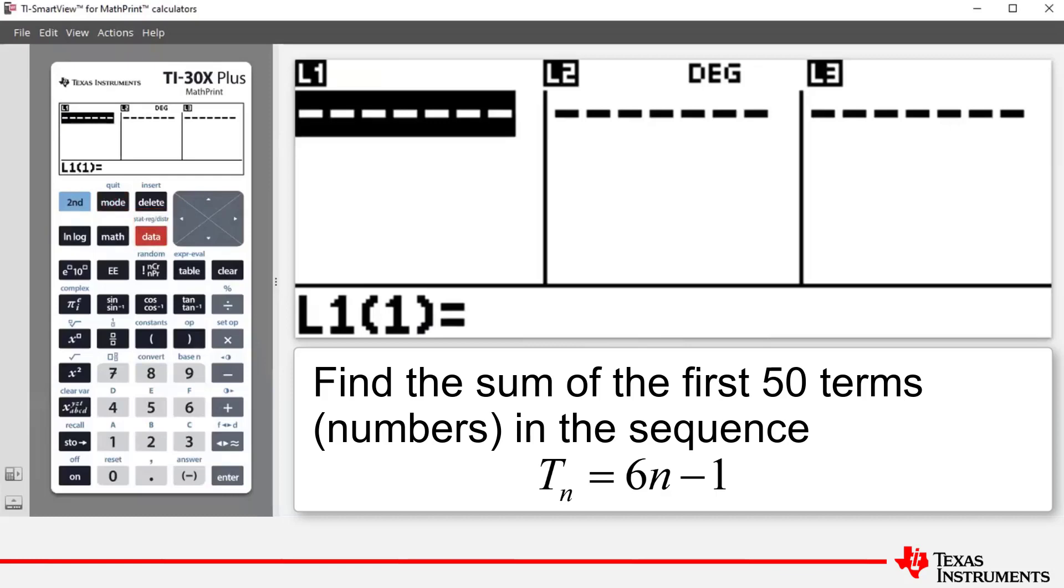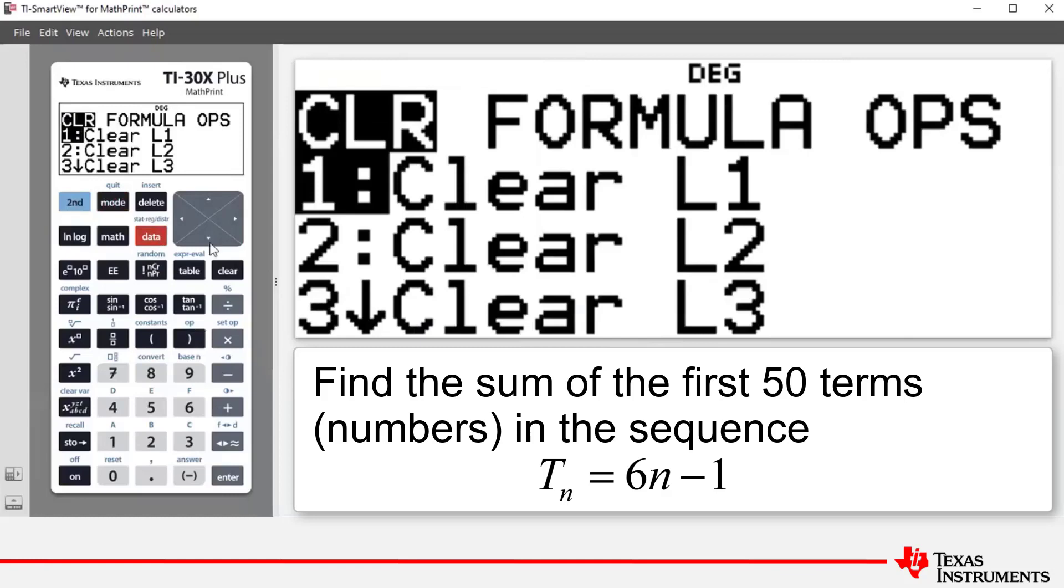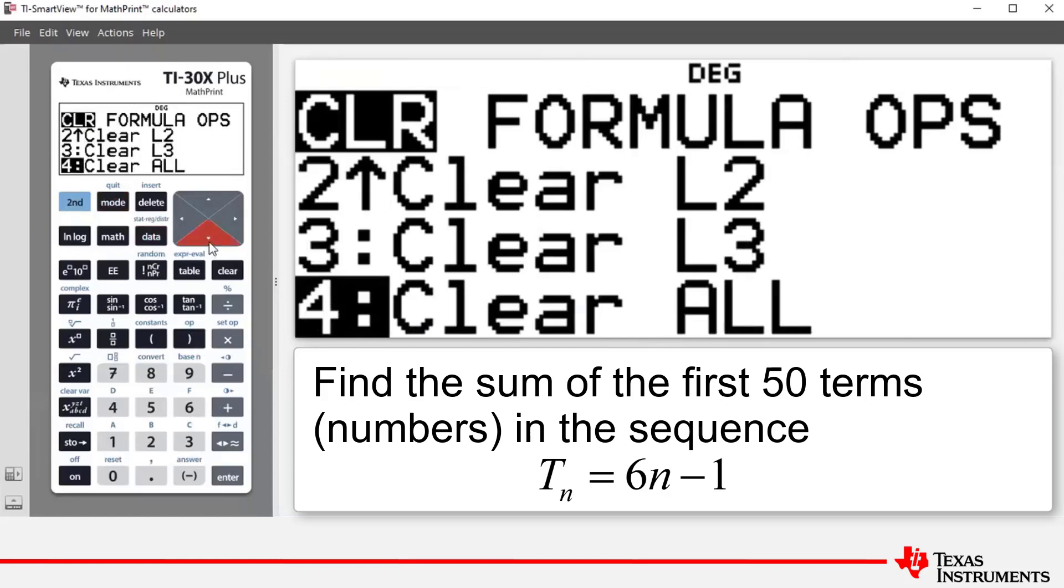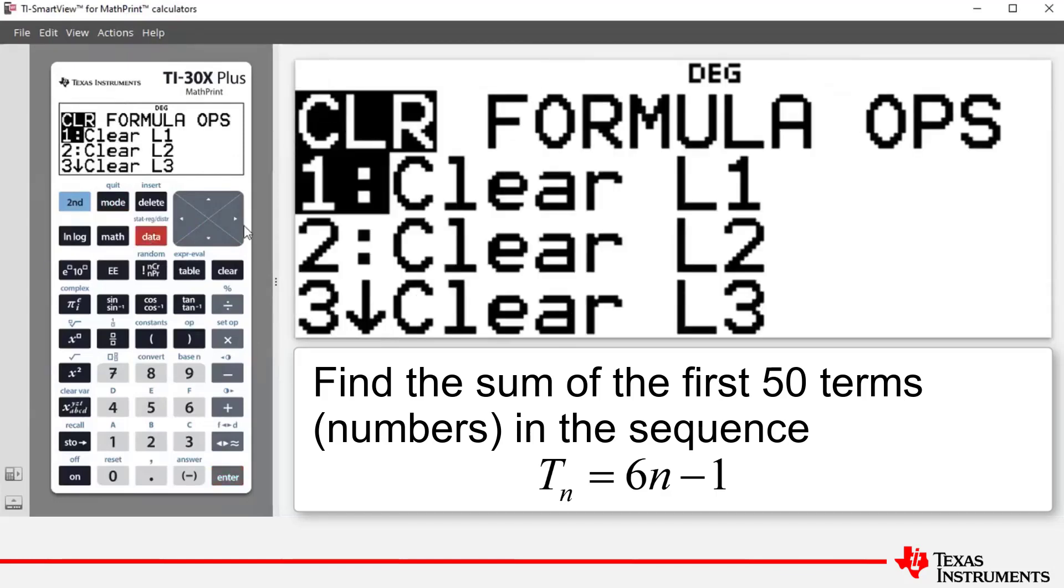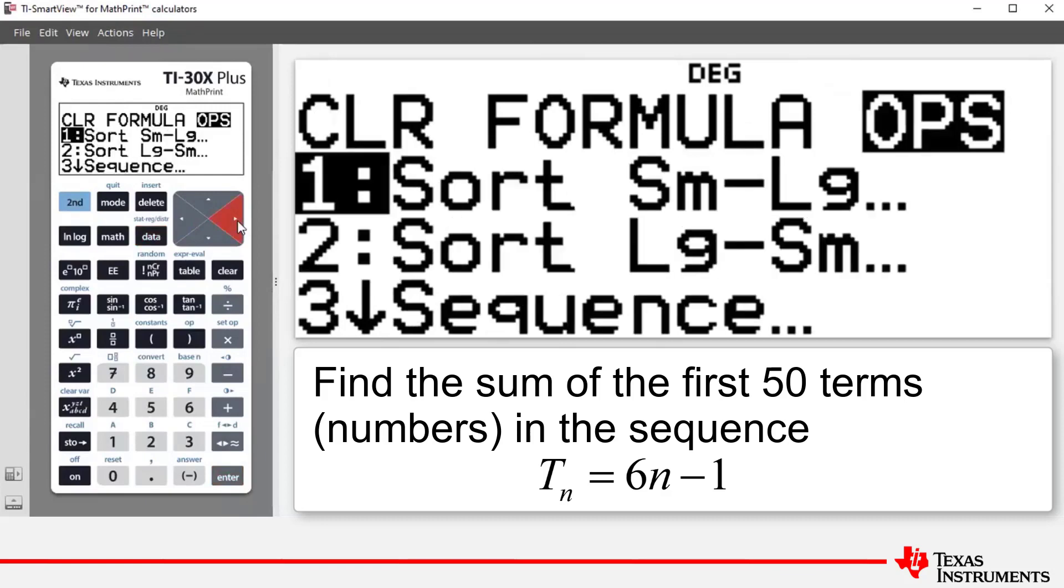If needed we press data and then either scroll down to clear all or press 4, or in this instance we can press enter and that clears the list of any values used in a previous question or problem. Now what we're going to do is we're going to press data again and we're going to scroll across to this command ops which is short for options.